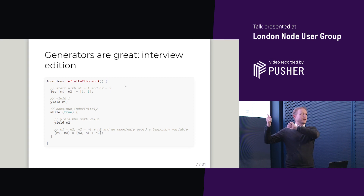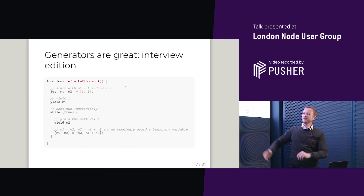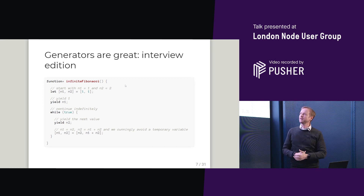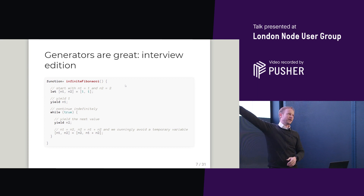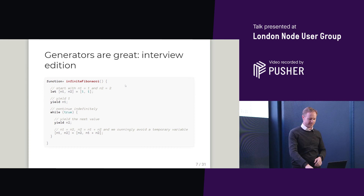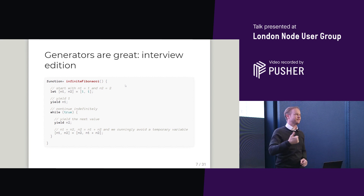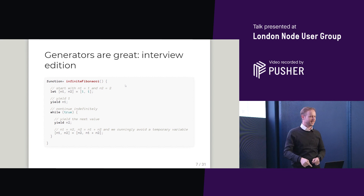This is my favorite way to answer Fibonacci as an interview question using generators — an infinite list of Fibonacci numbers. I also really like the in-place swap to avoid the temporary variable, although I wouldn't be surprised if it transpiles out.